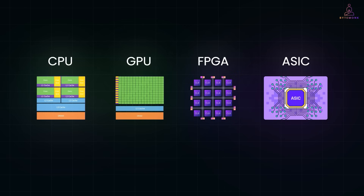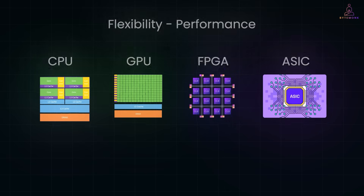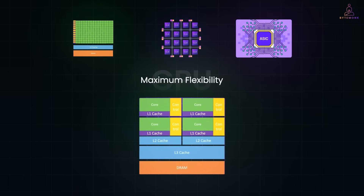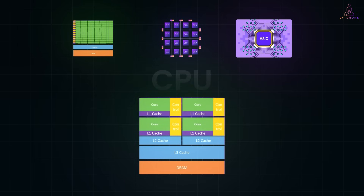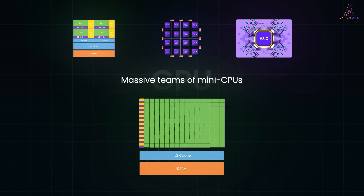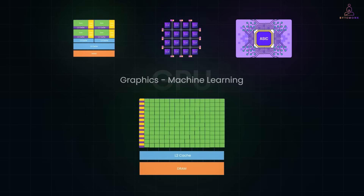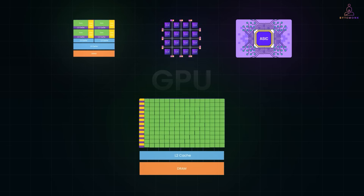CPUs are built for maximum flexibility — you can run any program on them, but they aren't the fastest at any one thing. Think of operating systems, apps, scripts — they handle a few tasks at a time and juggle them well, but that comes with overhead and unpredictable timing due to things like context switching and caching. GPUs are like massive teams of mini CPUs that do the same thing in parallel — perfect for graphics and machine learning, anything with lots of similar operations on big data. Still, they follow fixed pipelines and you write code for them using languages like CUDA.